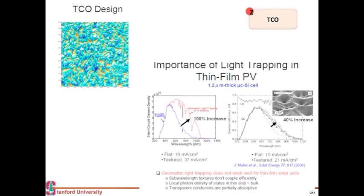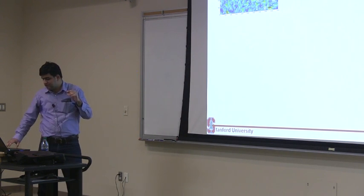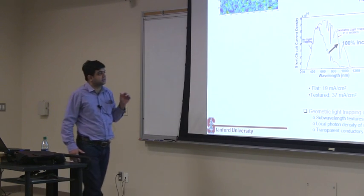And the other thing people do with this TCO is that they texture it. And this is done very easily by dipping it in, etching it to form this microstructure. And these microstructures help in increasing this efficiency.